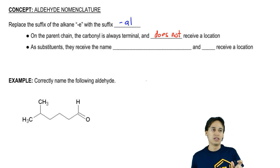Why? Because the carbonyl has an H on it. Remember, aldehydes have an H on them, so that means it's by definition on the end of the chain. So you don't need to name the location.